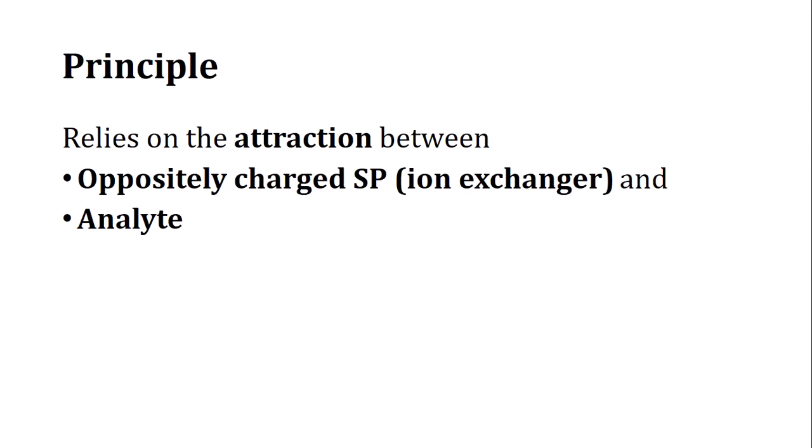In this lecture we are going to study different types of chromatographic techniques under column chromatography. We start with ion exchange chromatography. The name makes clear that ion exchange refers to the exchange of charged particles called ions. It relies on the attraction between an oppositely charged stationary phase, called the ion exchanger, and the analyte, which must carry a charge.